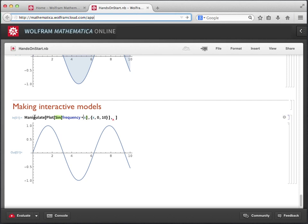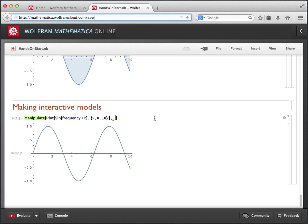Now, I go over to where the red caret is, and I give Mathematica Online a range of values for this parameter, frequency, that I've just added.